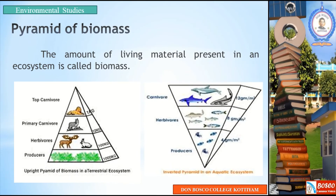The next type of ecological pyramid is the pyramid of biomass. The amount of living material present in an ecosystem is called biomass. At each trophic level, the amount of material present in an ecosystem is represented in a pyramid of biomass.